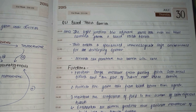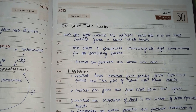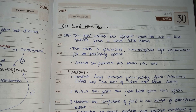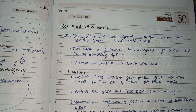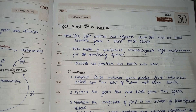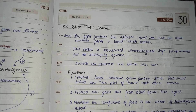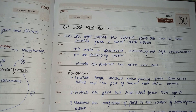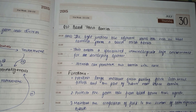We are going to discuss the blood testis barrier and its functions. The tight junction between adjacent Sertoli cells near the basal lamina forms the blood testis barrier. This creates a specialized, immunologically safe environment for the development of sperm. Do remember that steroids can penetrate this barrier with ease.